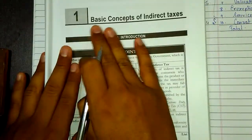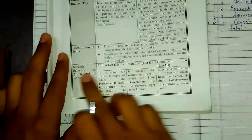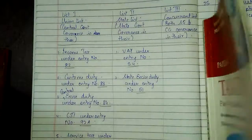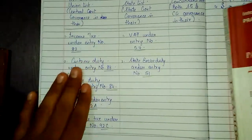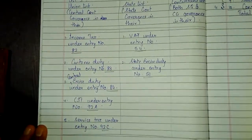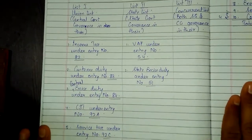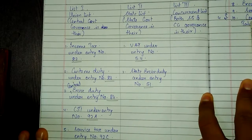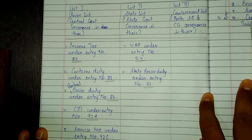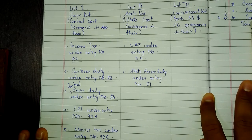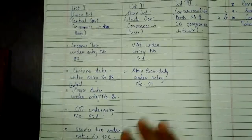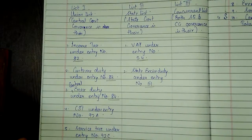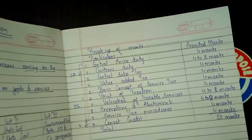This is the first page of basic concepts of indirect tax. Here you can see the Union List, State List, and Concurrent List; the entry numbers are given. I have given the description of which entry number belongs to which chapter — so this is important. Please pause the video and copy this. I hope you all have copied; I gave ample time.